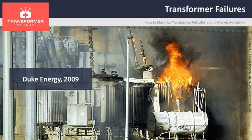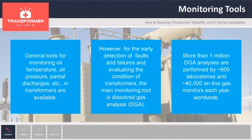Transformers are very reliable pieces of electrical equipment. However, in a very small number of cases, catastrophic failures may occur. If these failures were not anticipated, they may have huge financial consequences in terms of damage, lost revenues, and penalties. Several tools are available to monitor the condition of transformers. However, for the early detection of failures and faults, the monitoring tool most widely used is dissolved gas analysis, or DGA.